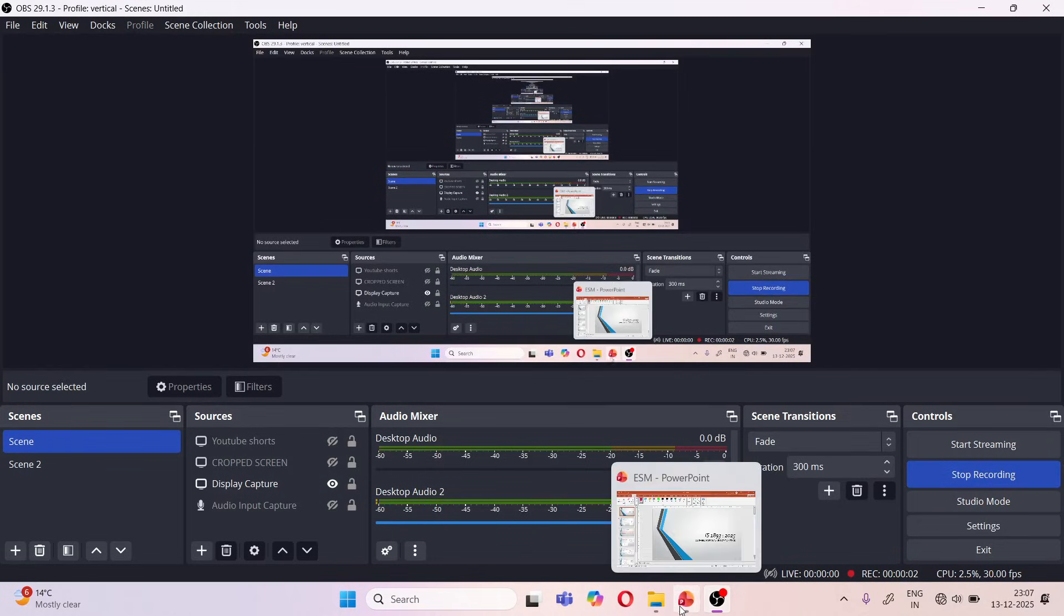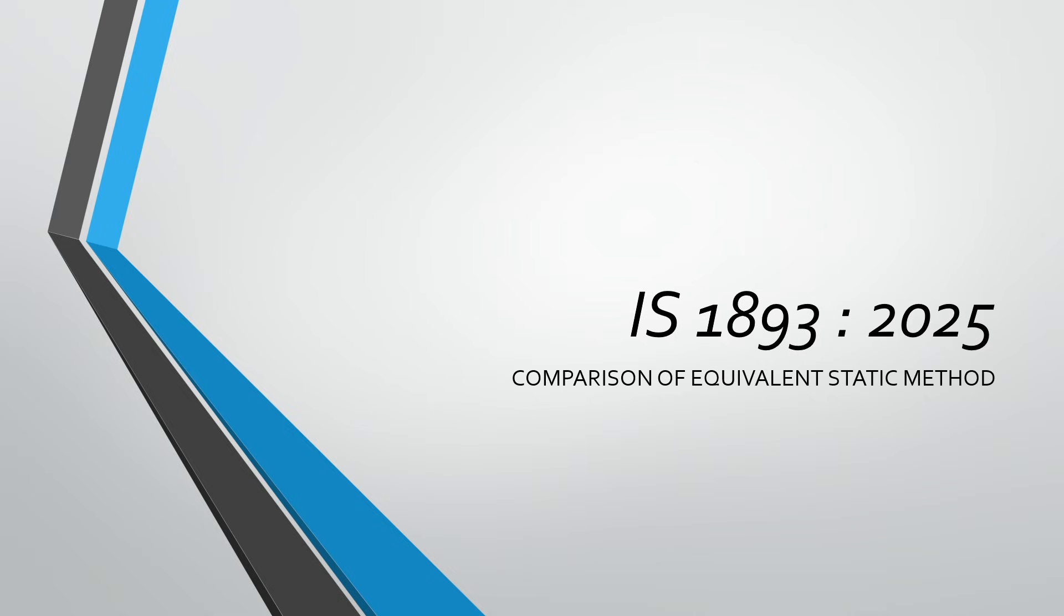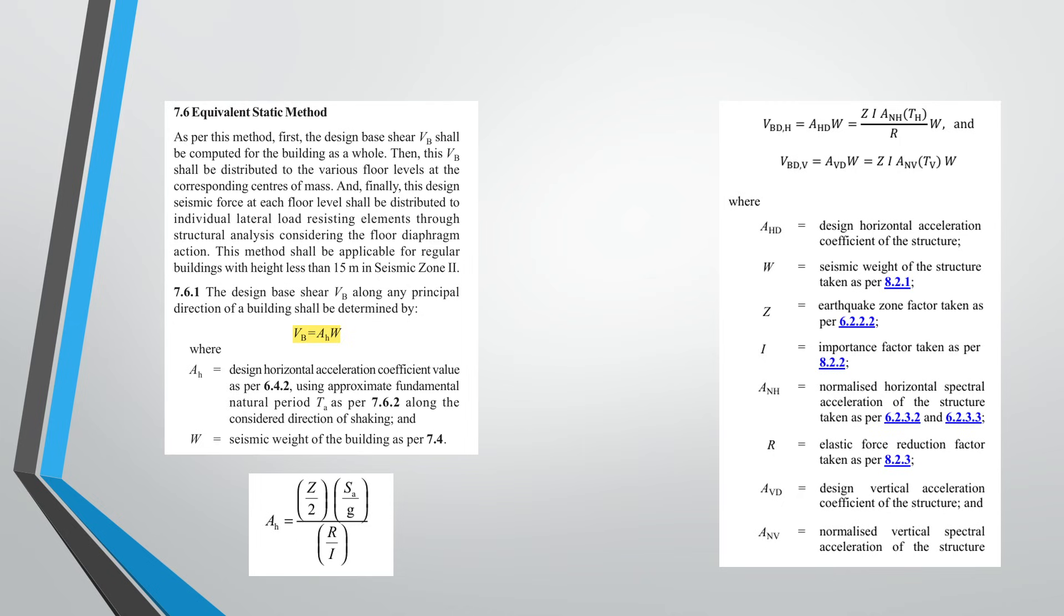Welcome to Real Civil YouTube channel. In this video, I am going to compare the equivalent static method as per IS 1893 2016 and as per IS 1893 2025. Also, I am going to discuss the very important point of applicability.